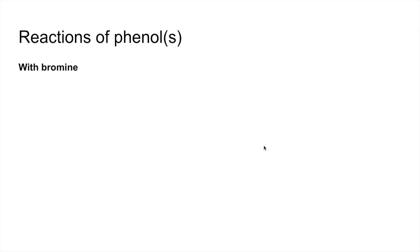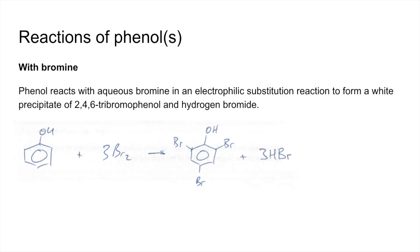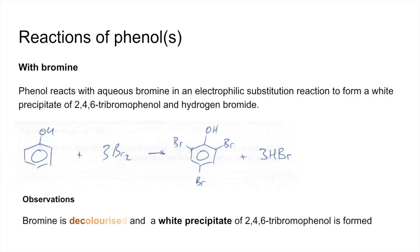The next reaction we'll look at is the reaction with bromine. Phenol reacts with aqueous bromine in an electrophilic substitution reaction to form a white precipitate of 2,4,6-tribromophenol and hydrogen bromide. The observations are that the bromine is decolourised and we get a white precipitate of 2,4,6-tribromophenol. It's worth noting that if we were reacting benzene with bromine, we would need a halogen carrier catalyst, and we'd only get monosubstitution — not tri-substitution.